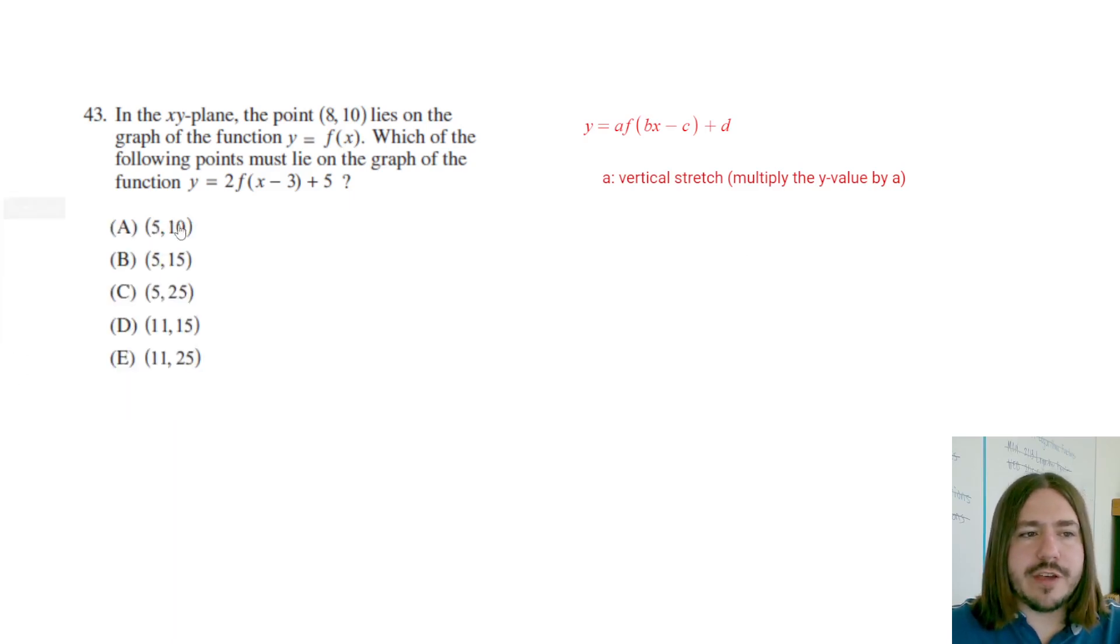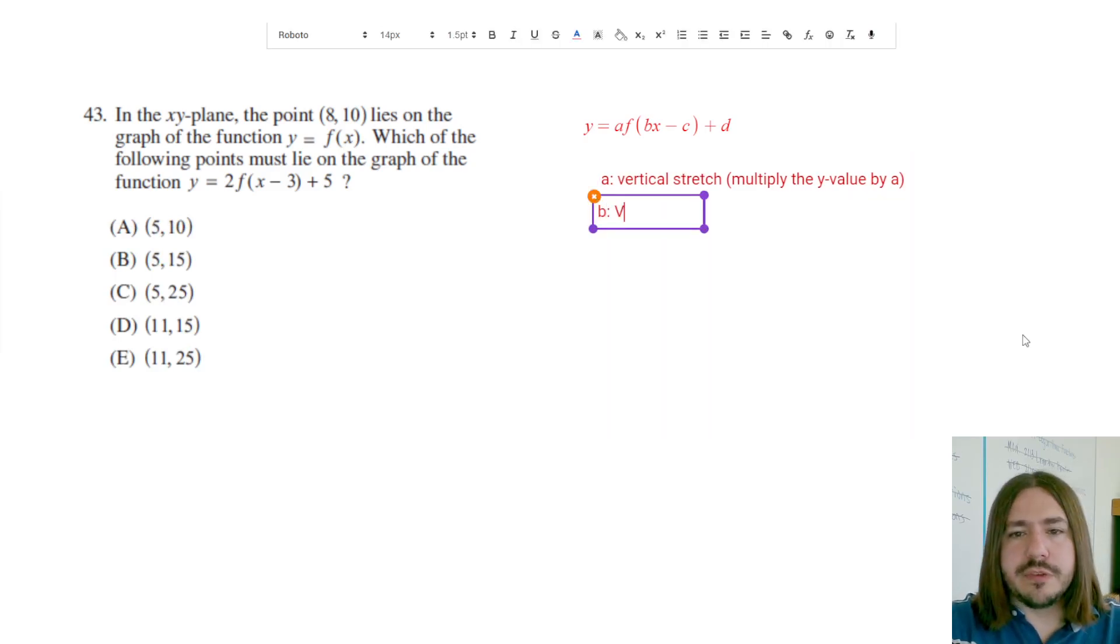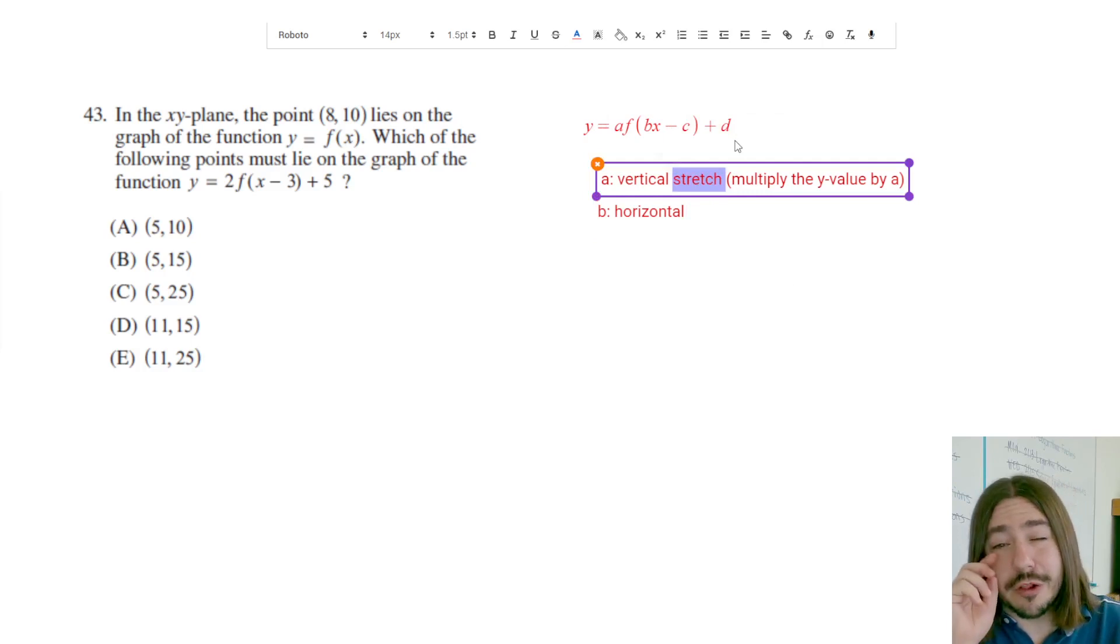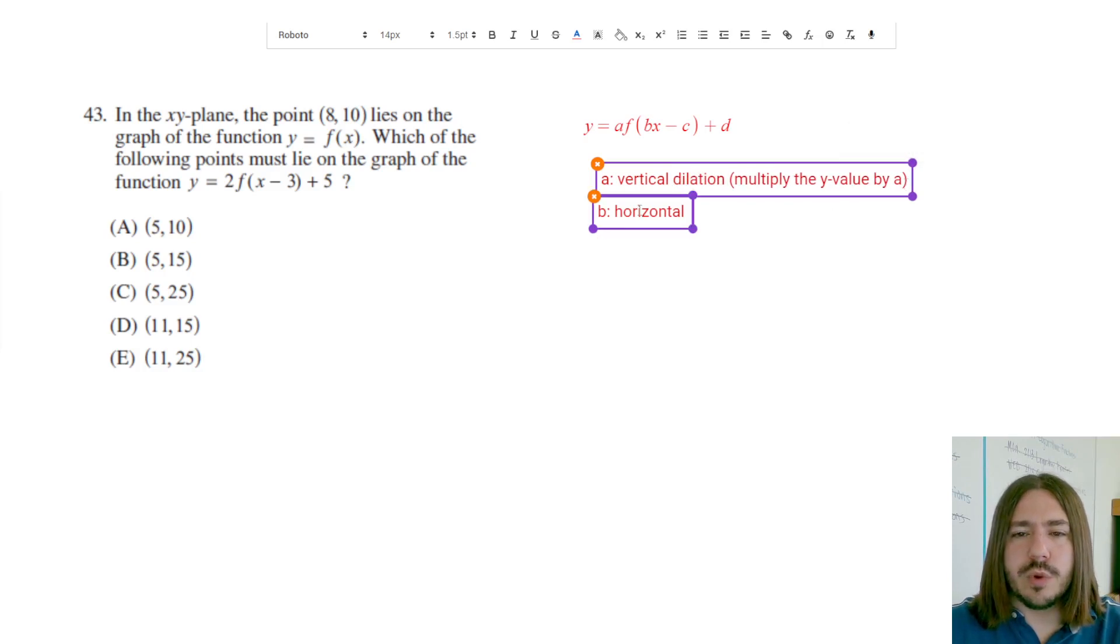B, and we don't have a B value here, but in case you end up with a problem that has a B value, B is going to cause a vertical, I'm sorry, not vertical, a horizontal dilation. And I said stretch here, it's actually only going to be a stretch if this number is bigger than one. If it's smaller than one, it's going to cause a compression. So just to write it a little bit more generically, I'm just going to call it a dilation. So dilation could be a stretch or a compression, depending on what the A value is.